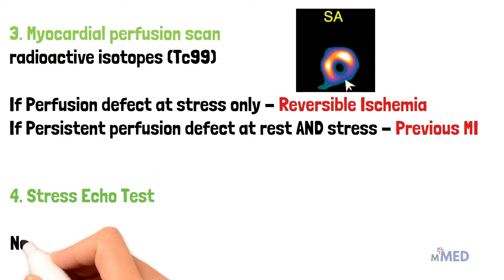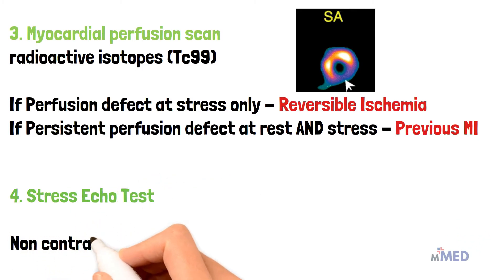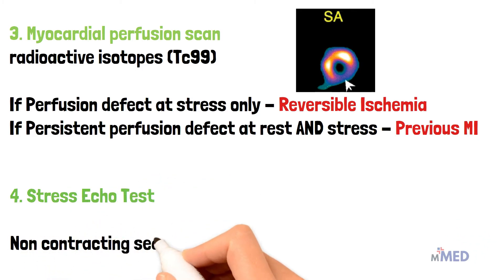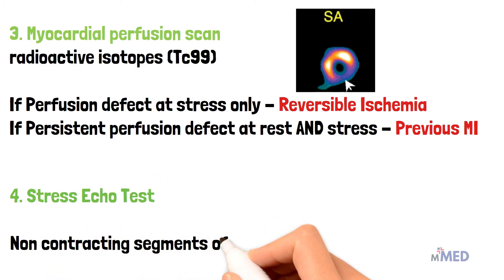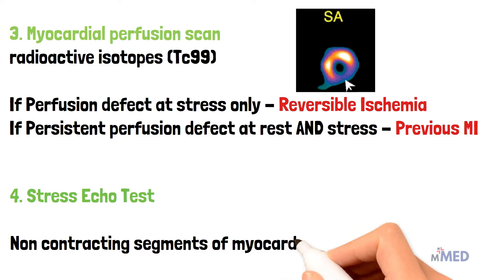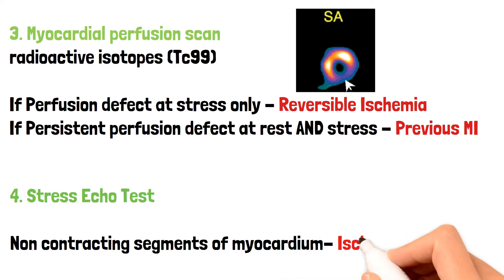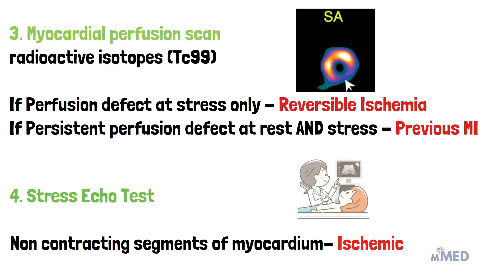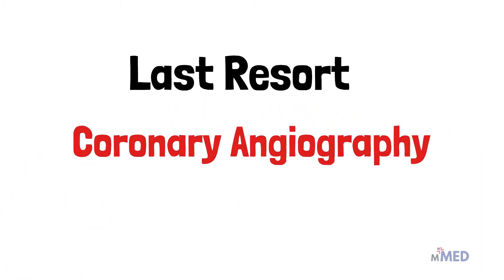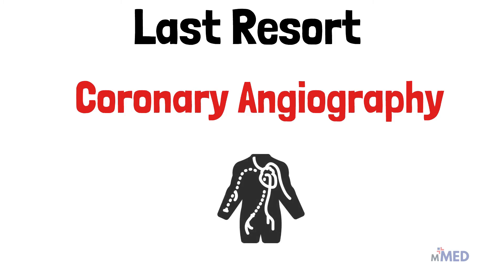If a certain part of the myocardium is ischemic, it will not show any contraction in the echo. When all of these non-invasive diagnostic methods fail, as a last resort we could go to a coronary angiography, which is an X-ray of the blood vessels.